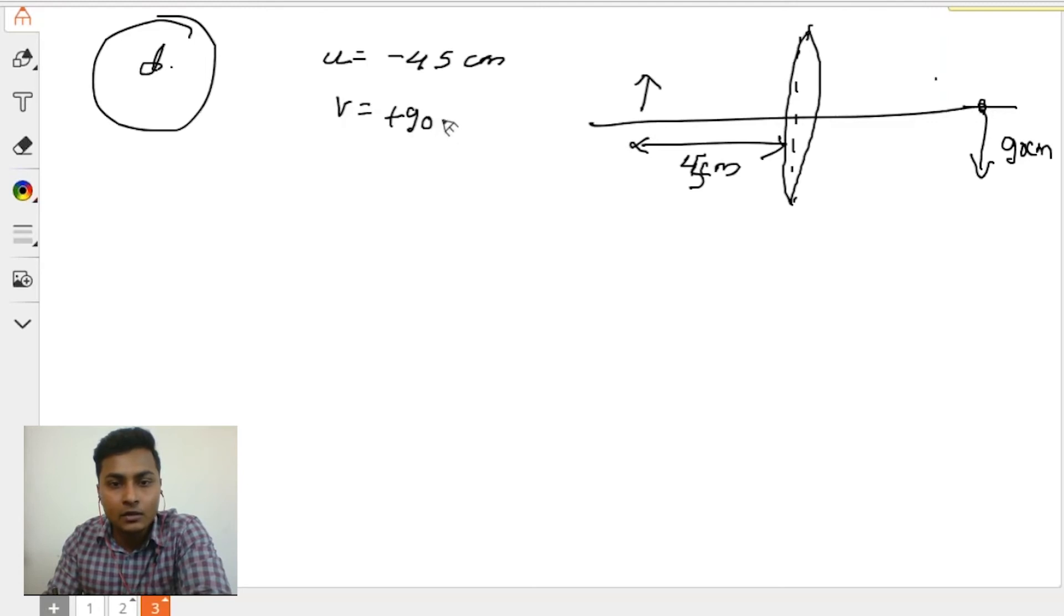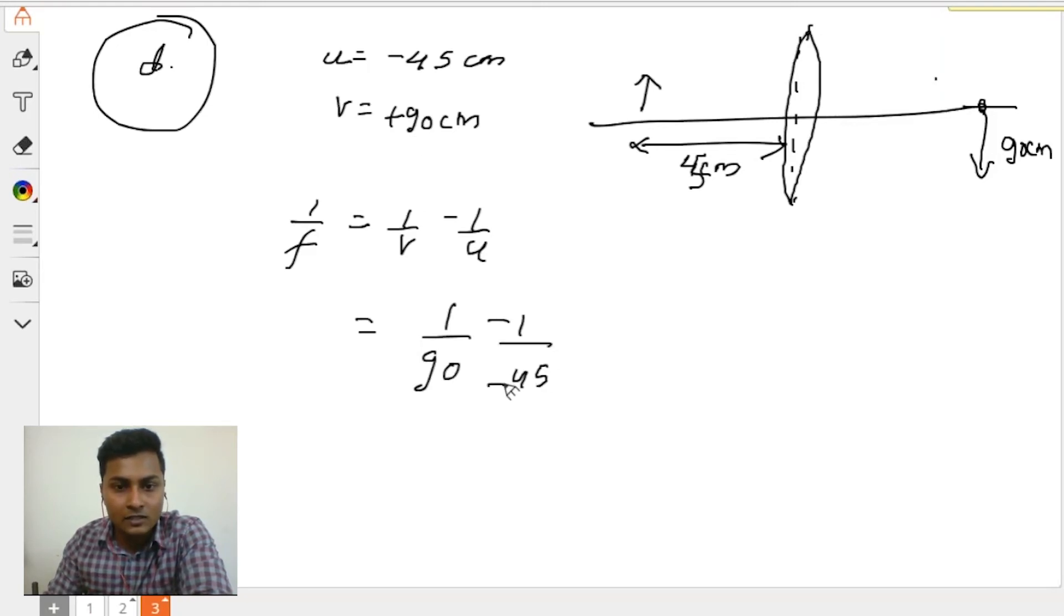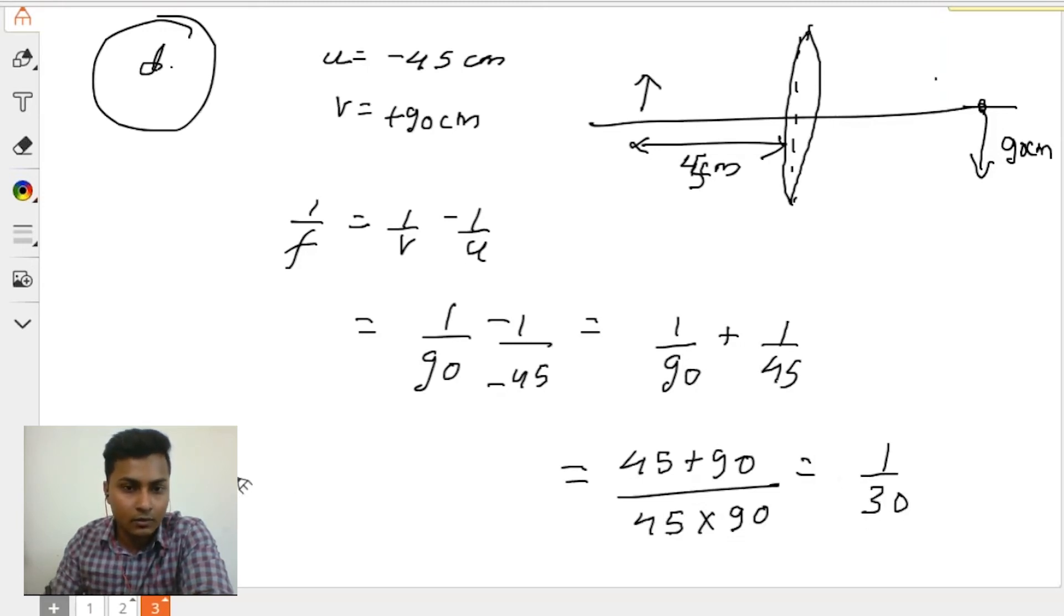Now we're going to apply the lens formula. So 1 by f is equal to 1 by v minus 1 by u. So 1 by v is nothing but 1 by 90 and u is 45, so minus 45. This minus and that minus will become positive. So 1 by 90 plus 1 by 45. I do LCM. It should come out to be 1 by 30 and focal length is equal to 30 centimeters positive. Yes, so now you have verified your answer.